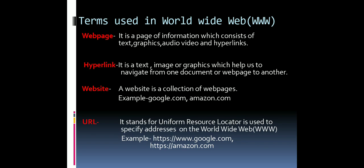A hyperlink is a type of text, image, or graphic which easily helps us to move from one page to another. If you click on a hyperlink — which may be a text, an image, or a graphic — when you move your mouse pointer over it, it will change the color of the hyperlink to a different color, and when you click it you can move to other pages.